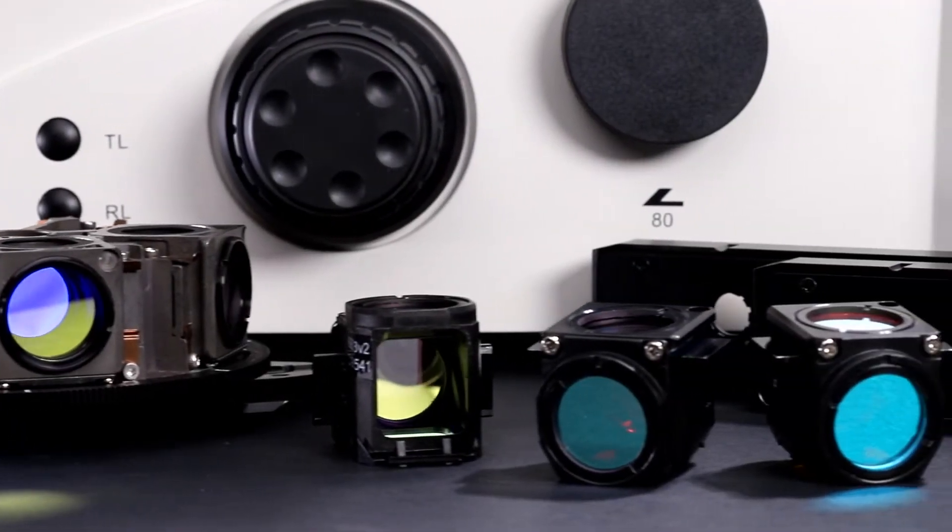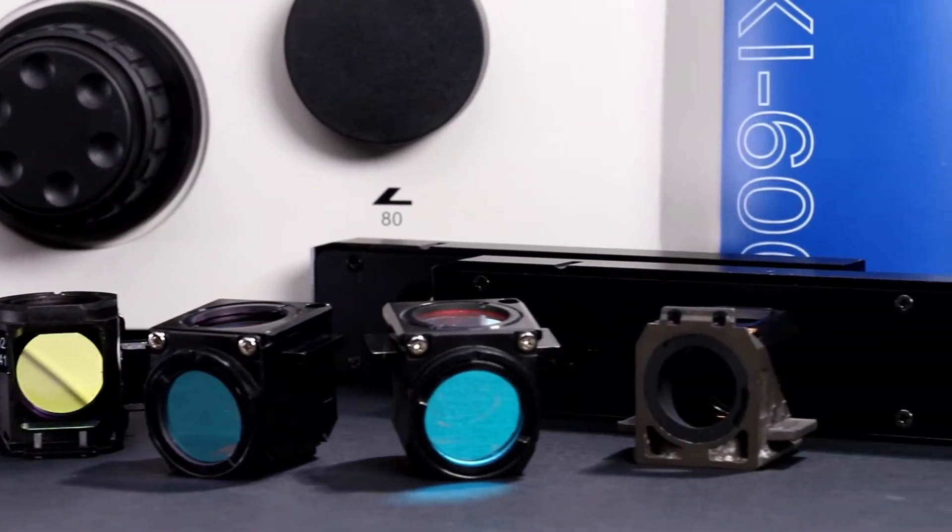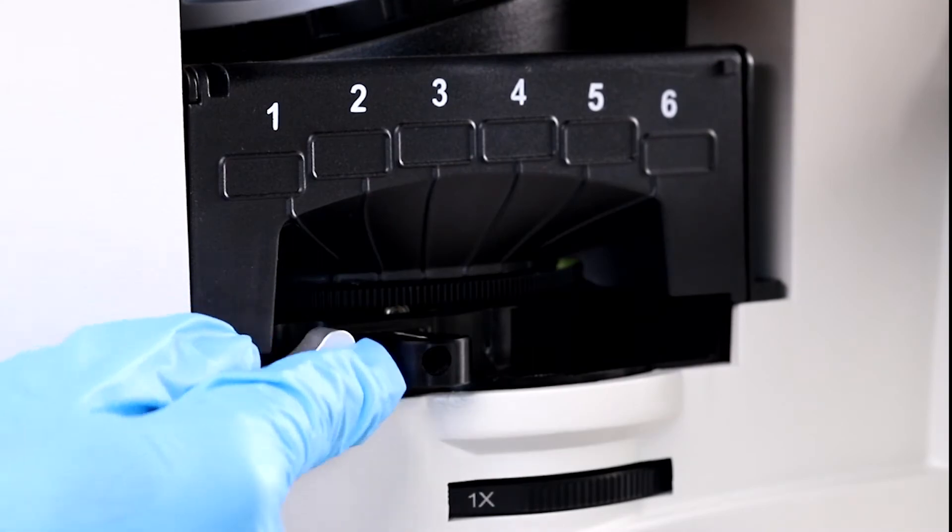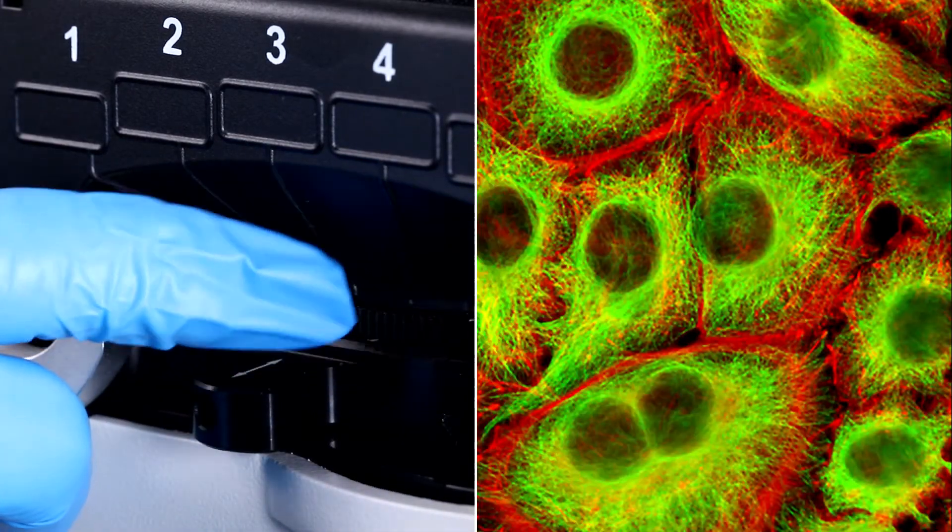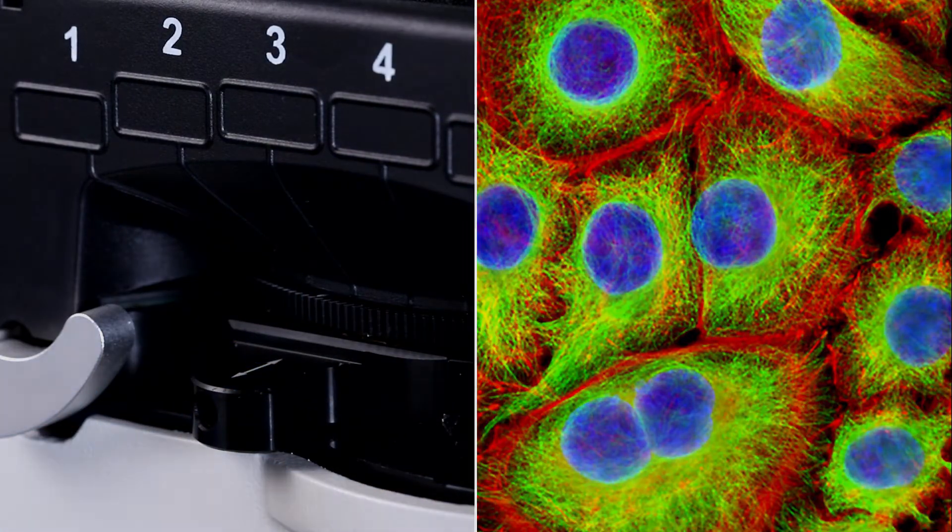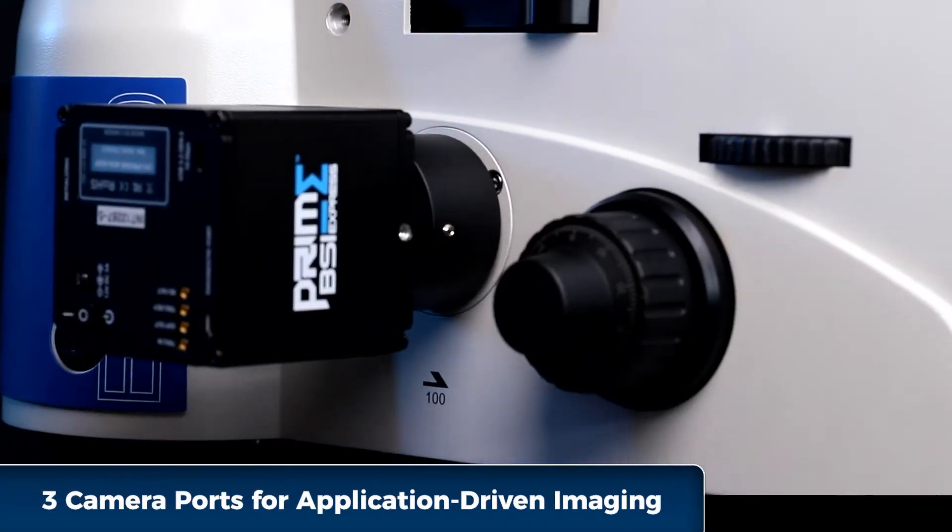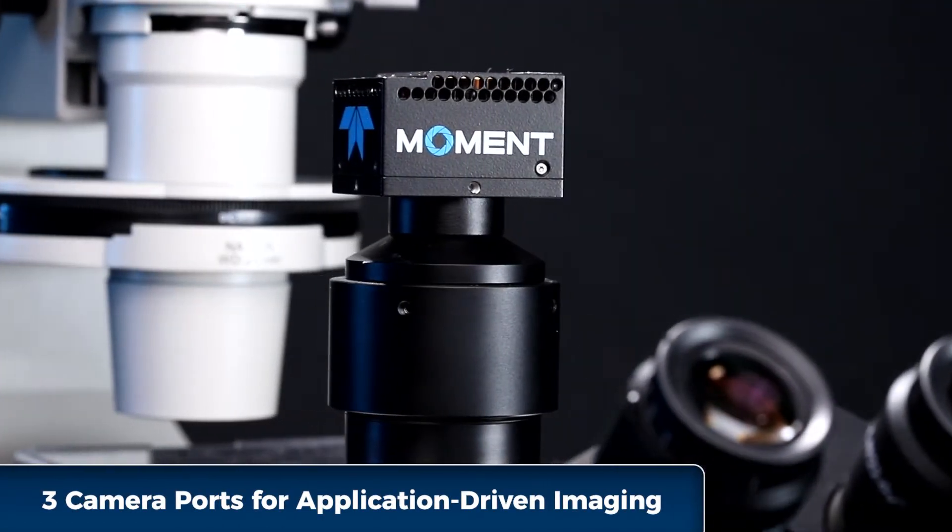Upgrade to fluorescence by adding a light source and the intelligent six-position turret. The EXI 600 accepts today's advanced fluorescent light sources from top manufacturers. With three camera ports standard, you choose the best cameras for your application without compromise.